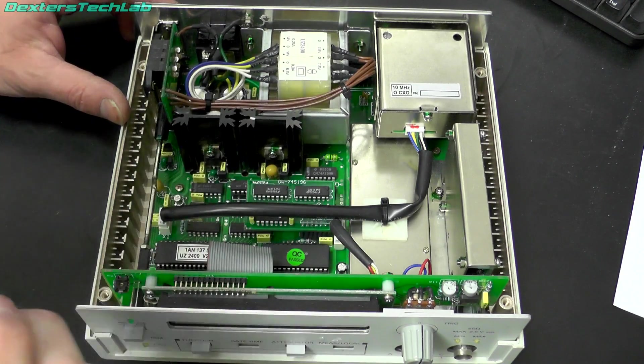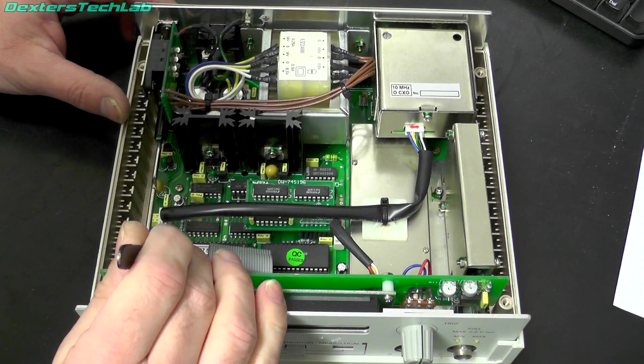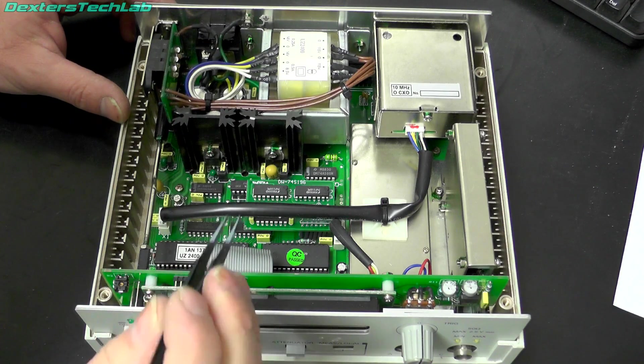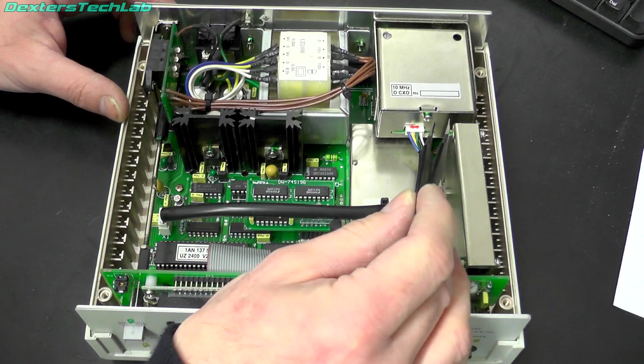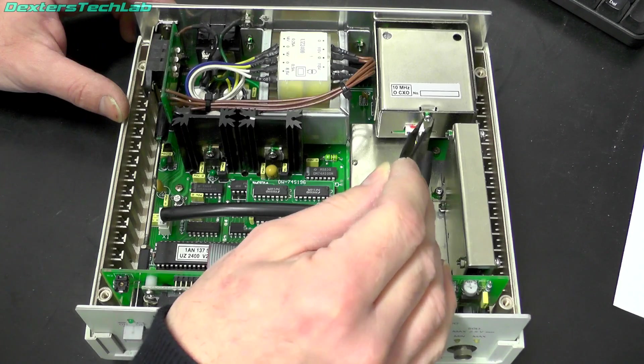We've got a voltage selection switch which just taps onto the transformer. Probably power supply. We've got a controller IC down in there with version 2.9 written on it, so that's obviously programmable. And then we have the oven controlled oscillator over here.